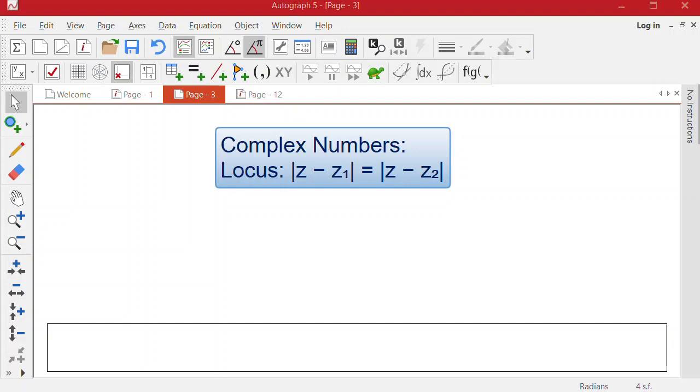For complex numbers, what does the locus of mod z minus z1 equal to mod z minus z2 look like? So to investigate that, let's use a new complex number page.